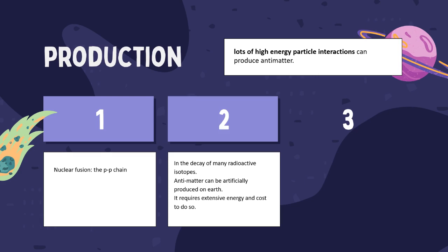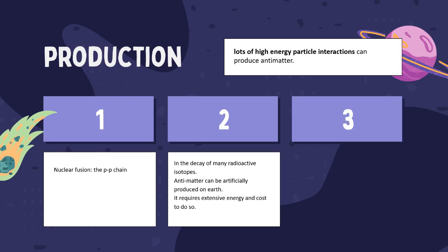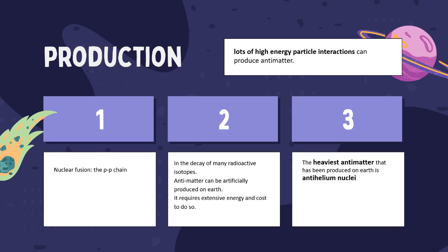Antimatter can be artificially produced on Earth as well, although it requires extensive energy and cost to do so. The heaviest antimatter that has been produced on Earth is anti-helium nuclei, or anti-alpha particles as they can also be called.